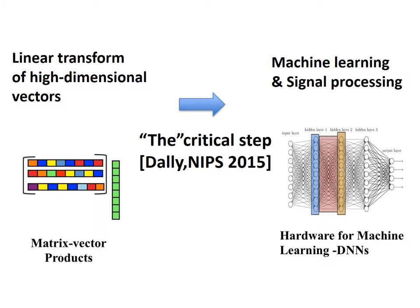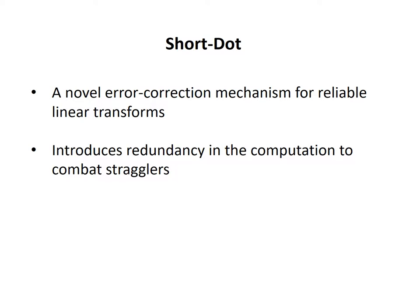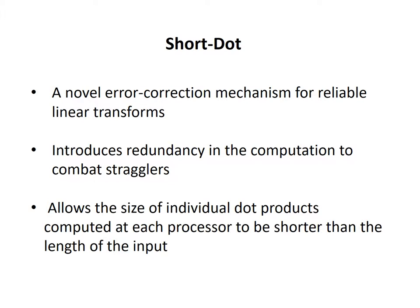We observe that the problem of computing linear transforms of high-dimensional vectors is the critical step in several machine learning and signal processing applications. So we propose ShortDot, which is a novel error correction mechanism for reliable linear transforms. It introduces redundancy in the computation to combat stragglers and allows the size of individual dot products computed at each processor to be shorter than the length of the input.